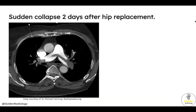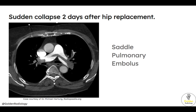Next question: sudden collapse two days after hip replacement — shown is this CT image. Diagnosis? This is a saddle pulmonary embolus. We're looking at a CTA of the chest, most commonly ordered to evaluate for pulmonary embolism. We time our contrast bolus so we scan when contrast is opacifying the pulmonary arteries. This is the main pulmonary artery, dividing into the right and left pulmonary arteries. Contrast is bright white, so this dark stuff represents clot. We have a saddle pulmonary embolus because the clot is sitting right at the bifurcation into the right and left pulmonary arteries.